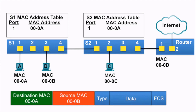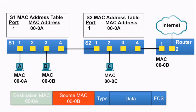Now, let's have PCB send a frame back to PCA. The source MAC address of the frame is 000B, and the destination MAC address is 000A.